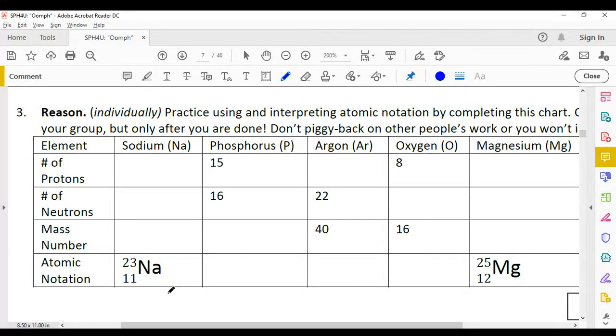In our first example from question three of our handbook, we have sodium, Na. Now the numbers beside it are 23 and 11. The top number when we write using atomic notation, 23, is the mass number.